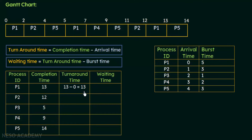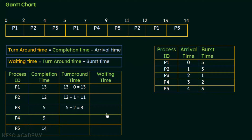The turnaround time is completion time minus arrival time. For p1: 13 minus 0 equals 13 units. For p2: 12 minus 1 equals 11 units. For p3: 5 minus 2 equals 3 units. For p4: 9 minus 3 equals 6 units of time. For p5: 14 minus 4 equals 10 units of time. We have now found the turnaround times for processes p1 to p5.